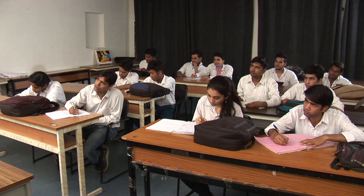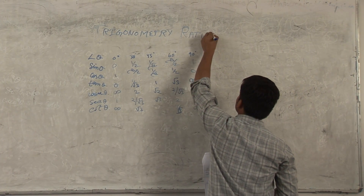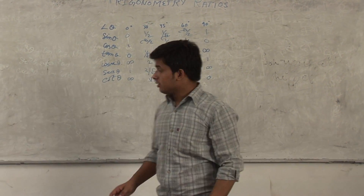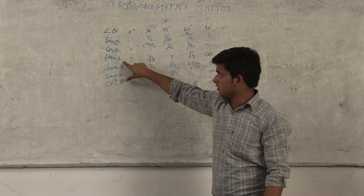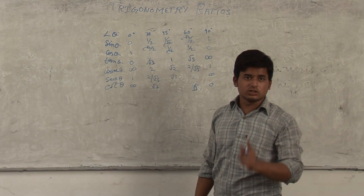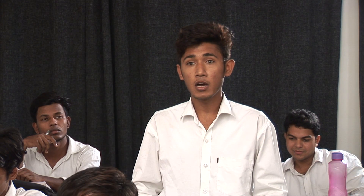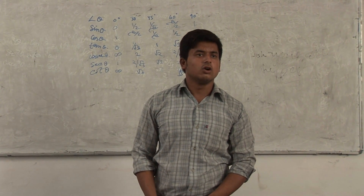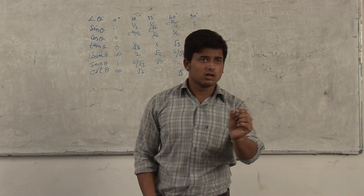This is the trigonometric table. Okay, this is the trigonometric table: sin theta, cos theta, tan theta, cosec theta, sec theta, cot theta. Okay? These are the values you should remember. Tomorrow we will test. Sir, what is theta? It is a simple symbol which represents the angle. You don't need to overthink it. Just keep your attention on what I have said. Okay?